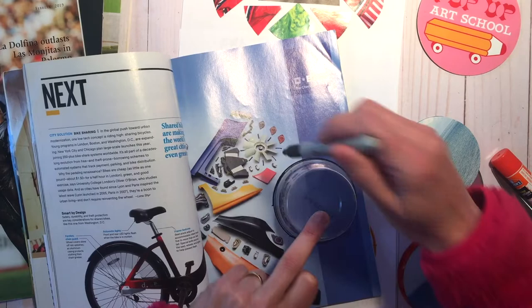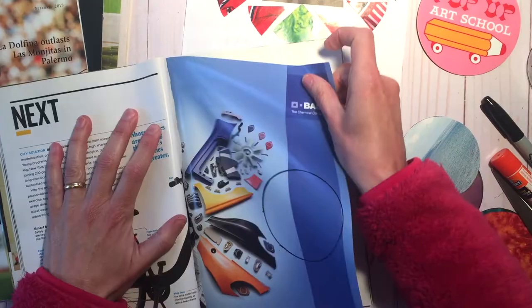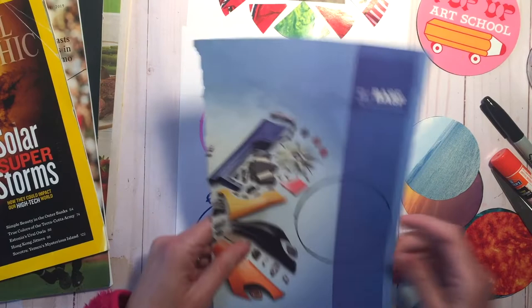All right, so I'm going to put the cup, trace around it, then I'm going to rip the page out so it's easier to cut. I already have a bunch cut out on the side so I'm going to use those to show you how to do this.